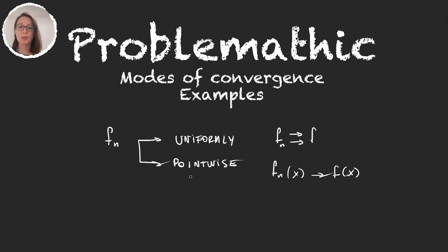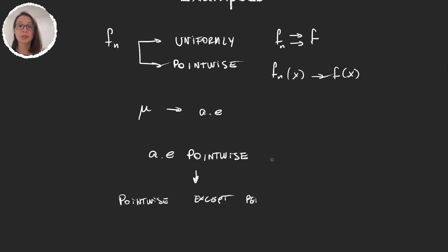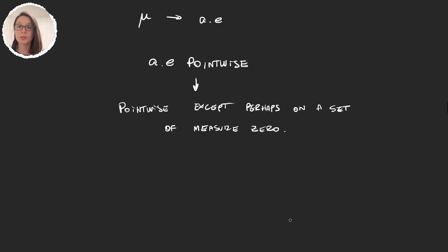We say fn goes to f pointwise if it converges for every x. When we add a measure to our space, we get the notion of almost everywhere — something happens almost everywhere if it happens everywhere except on a set of measure zero. This immediately gives us almost everywhere pointwise convergence.